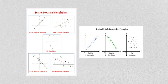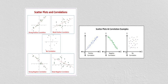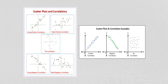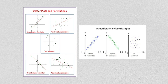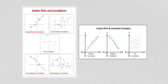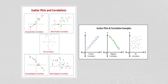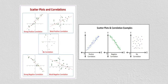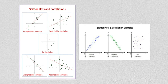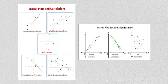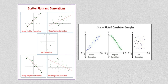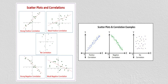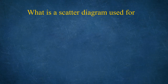Regarding scatter plots and correlations: a positive correlation goes from the left-lower point to the right-upper point. A negative correlation runs from right to left in an upward direction. No correlation means the points are not intersecting in any pattern — there is no relationship between them. You can also identify strong positive correlation, weak positive correlation, no correlation, strong negative correlation, and weak negative correlation.